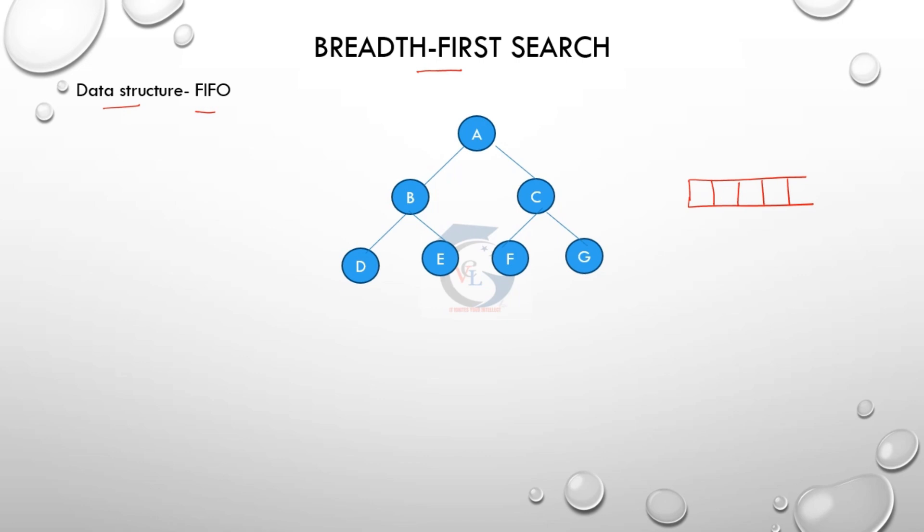In BFS, nodes are visited breadth-wise: A, B, C, D, E, F, G, H, N. Starting from root node A, then level by level — B, C, D, F, G. This means breadth-wise visit. A is the root node.